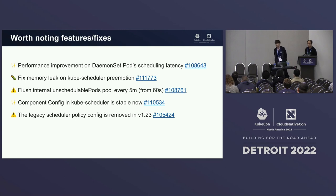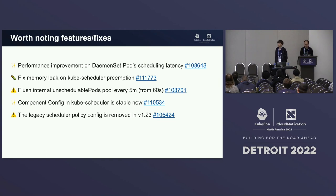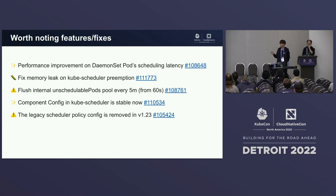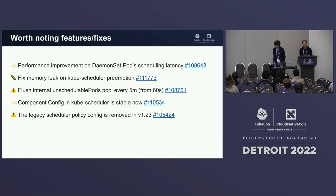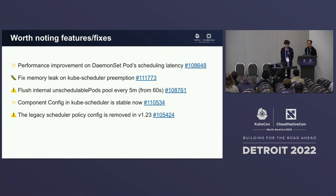We updated the pre-filter interface to return a pre-filter result, which is a Go struct containing information about which nodes to evaluate in downstream extension points. By using this in node affinity for DaemonSet pods — which are scheduled to each node via node affinity — we can improve scheduling performance for DaemonSet pods.